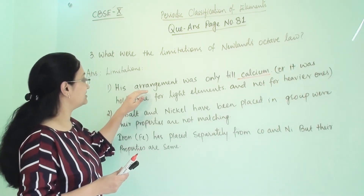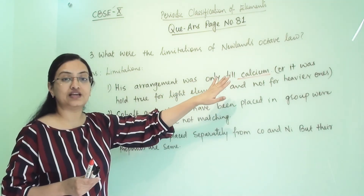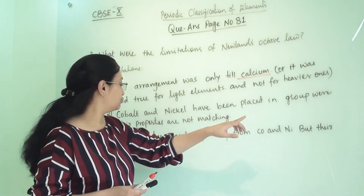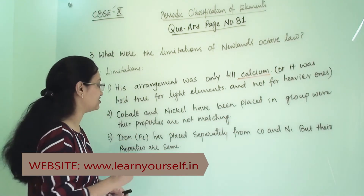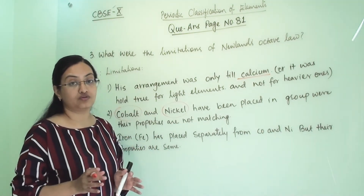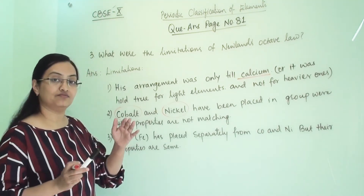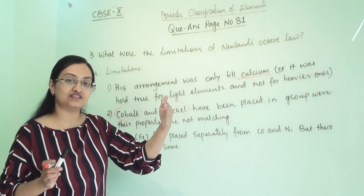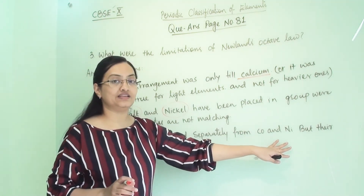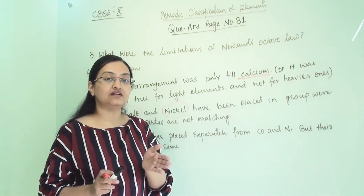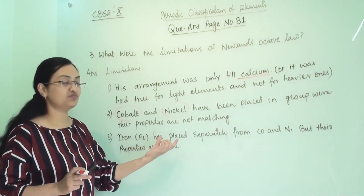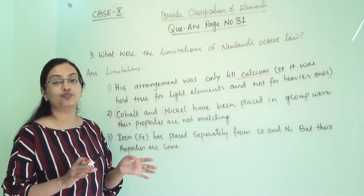The second limitation is that cobalt and nickel were placed in groups where their properties do not match the other elements. Additionally, iron (Fe) was placed separately from cobalt and nickel, even though iron, cobalt, and nickel have the same properties and should be grouped together.